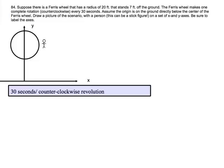Since the Ferris wheel is 7 meters off the ground, the circle should be 7 meters up from the origin. Now make sure you label 20 meters for the radius, and also label the origin with a red dot.